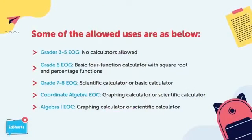Calculators are an allowable tool but not necessary for any GMAS items. For Grades 3–5 EOG, no calculators are allowed. Grade 6 EOG uses a basic four-function calculator with square root and percentage functions. Grades 7 and 8 EOG use a scientific or basic calculator. Coordinate Algebra EOC and Algebra 1 EOC use a graphing calculator or scientific calculator.